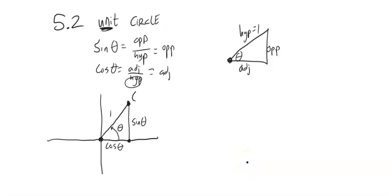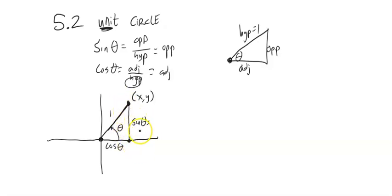Notice that the terminating point is (x, y). Since x is the width and y is the height, sine of theta is the y value of this point, and cosine of theta is the x part of that.